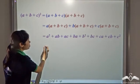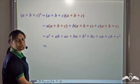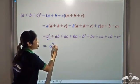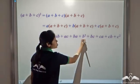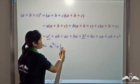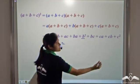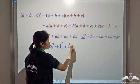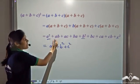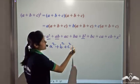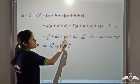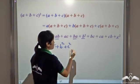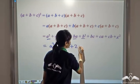Now let us simplify this further. We have an a² term, a b² term, and a c² term. We also have an ab term and a ba term — these are like terms, so we can combine them: ab plus ba is 2ab.